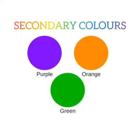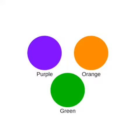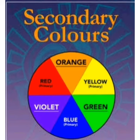Purple, orange and green are secondary colors. Now children, get ready with the things to make secondary colors from the primary colors.